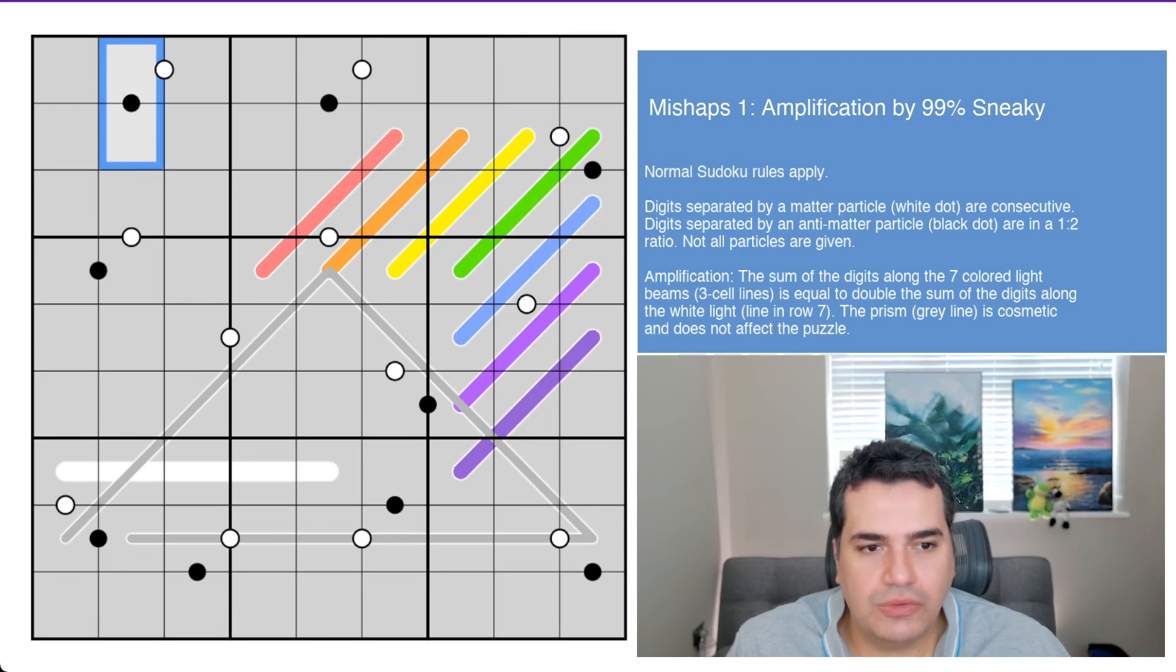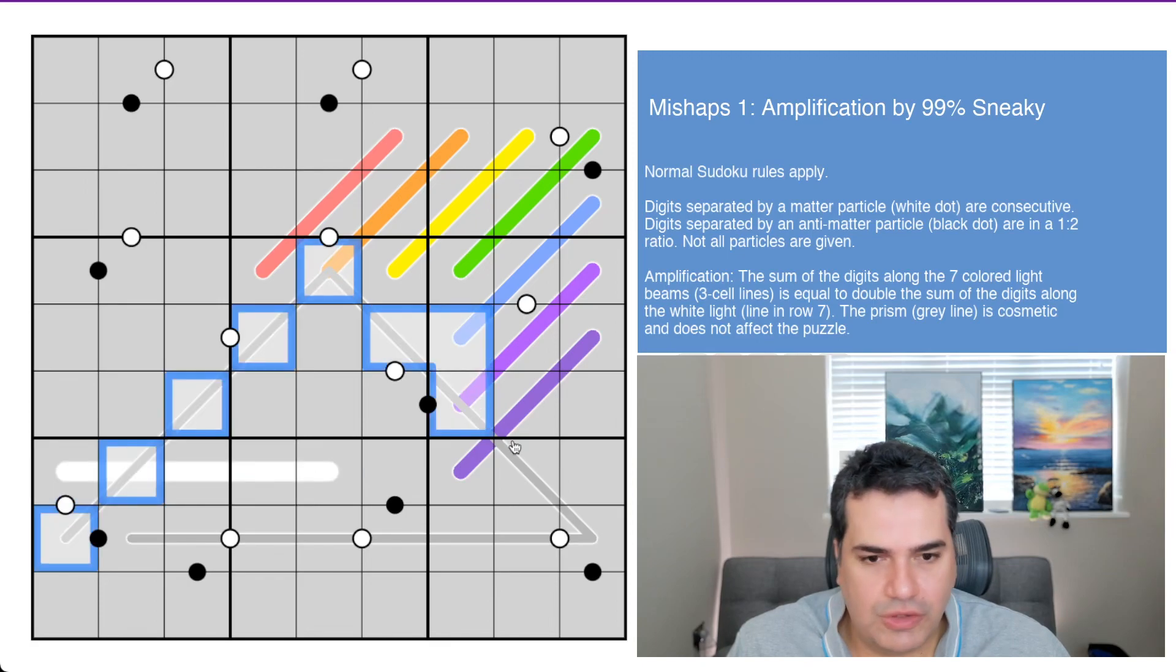The sum of the digits along the seven colored light beams, so presumably that's all of these cells, of which there are three-cell lines, is equal to double the sum of the digits along the white line in row seven. The prism, which I was questioning earlier, the gray line is cosmetic and does not affect the puzzle. That's all the rules we have.